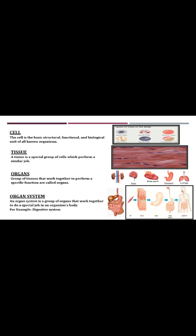Tissue is a special group of cells which perform a similar job. Different groups of tissues that work together to perform a specific function are called organs, like brain, heart, stomach and lungs are our vital organs. Different organs are combined to form an organ system, for example the digestive system.